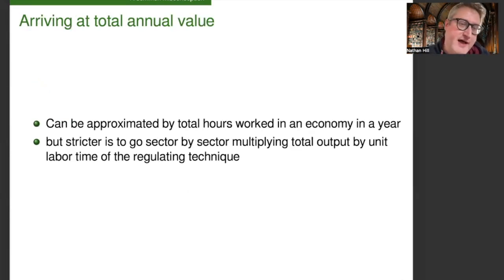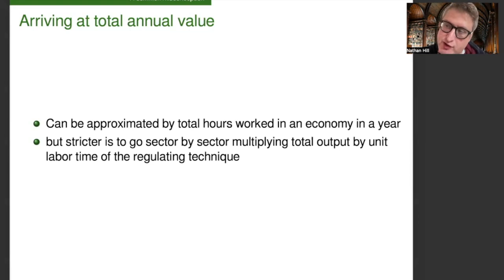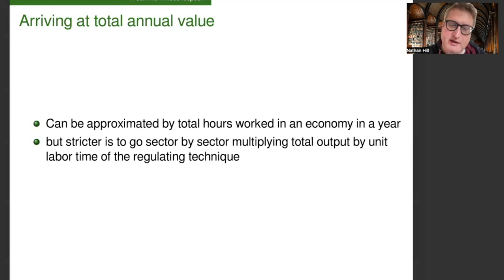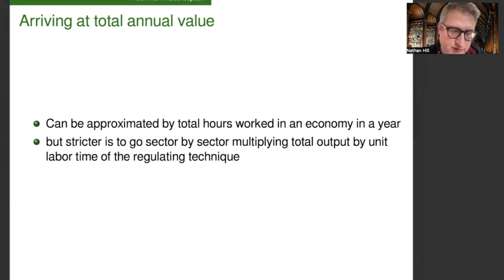So we've introduced the idea of value. How do we arrive at total annual value? This can be approximated by the total hours worked in an economy in a year. Some people will be using particularly efficient techniques that aren't generally reproducible, and some people will be using out-of-date inefficient techniques. To a certain extent, those will cancel each other out. But if the data were available, it would be much stricter to go sector by sector, multiplying the total output of that sector by the unit labor time of the regulating technique in that sector.